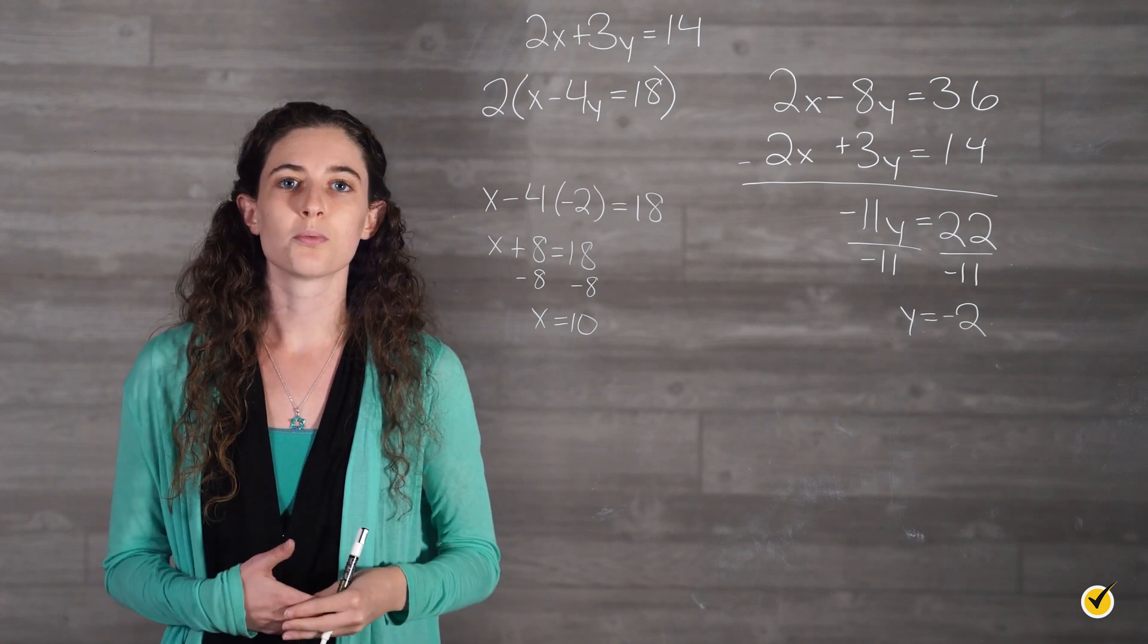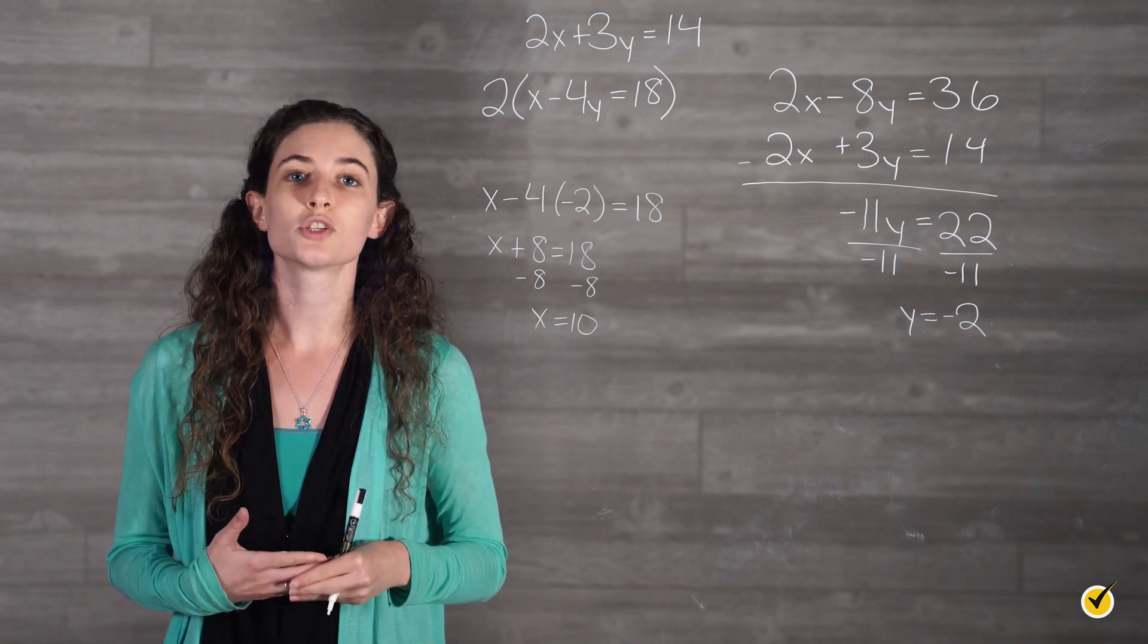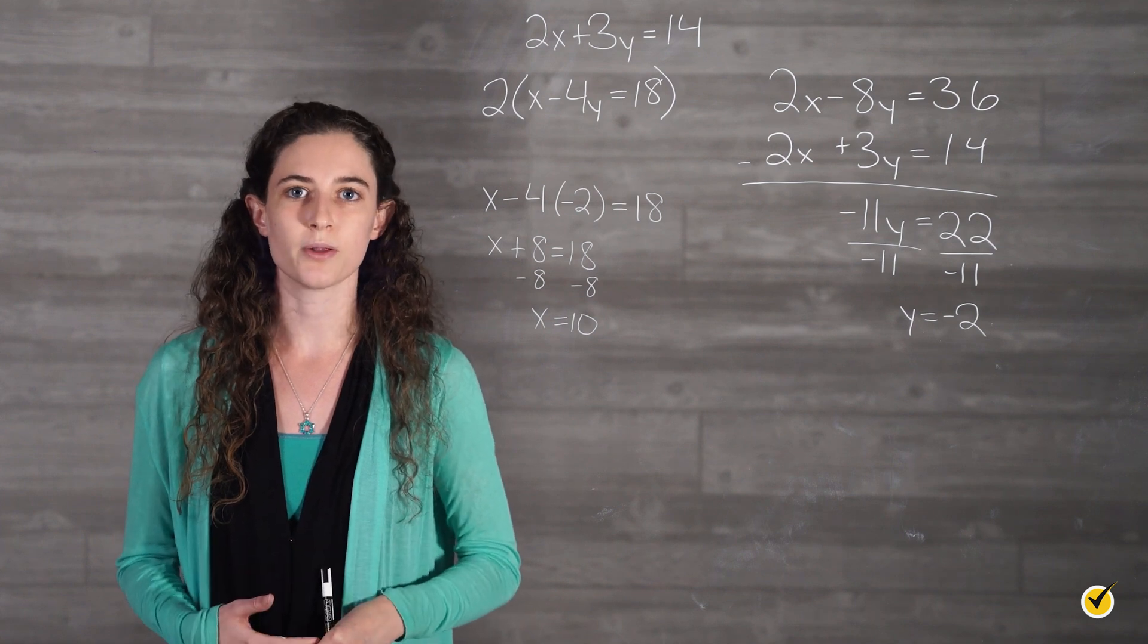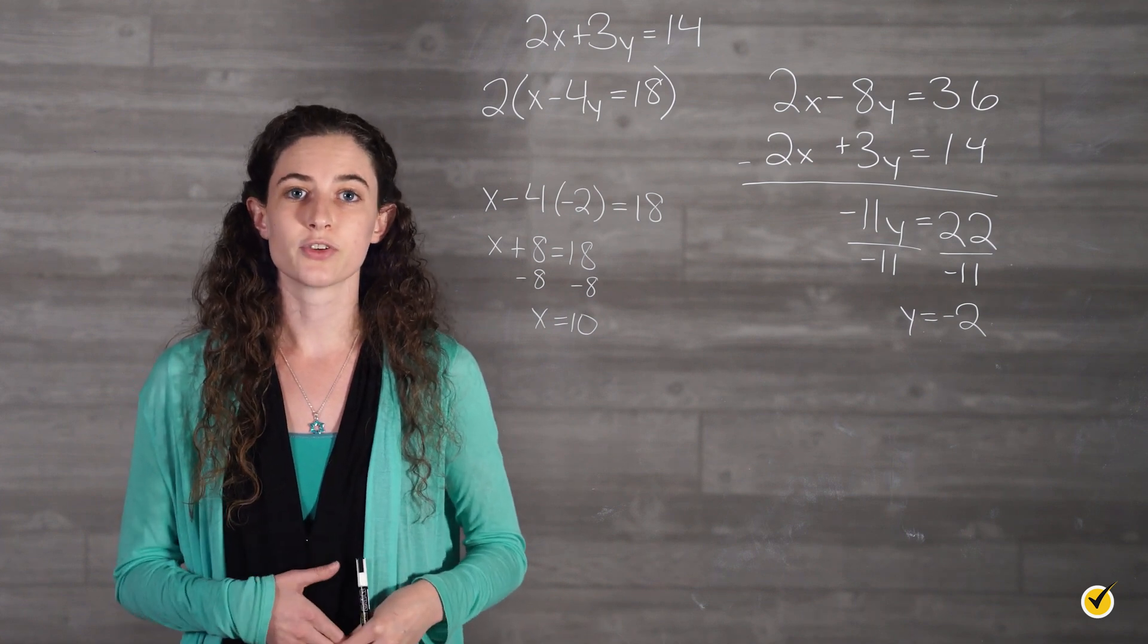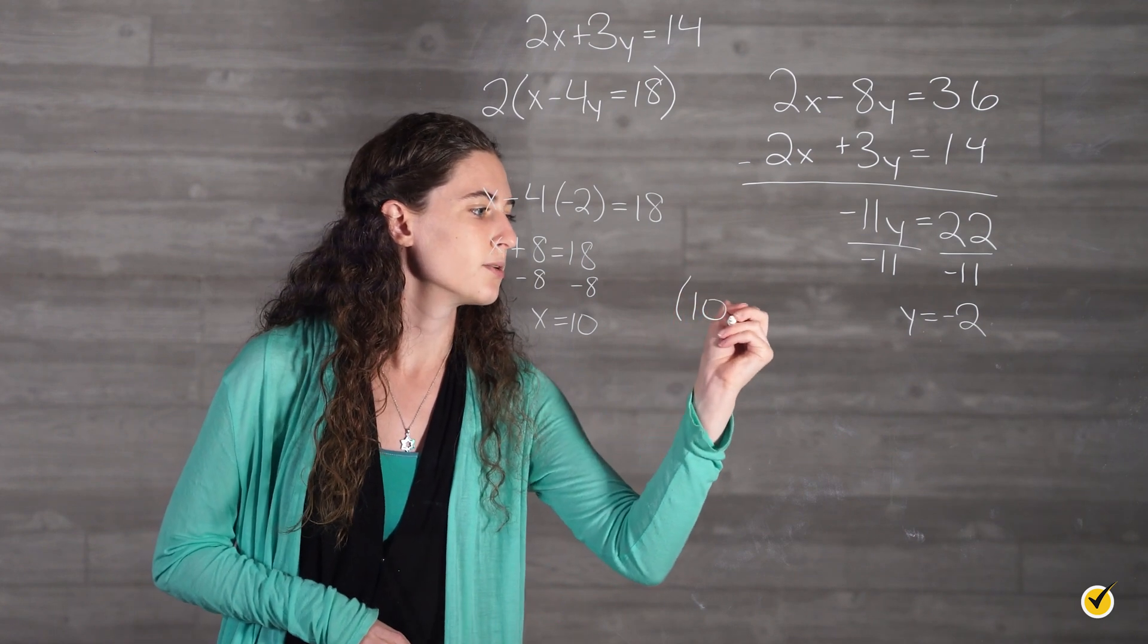Since we are solving for the point of intersection between these two functions, we want to write our final answer as a coordinate point. Our point of intersection for this example is (10, -2).